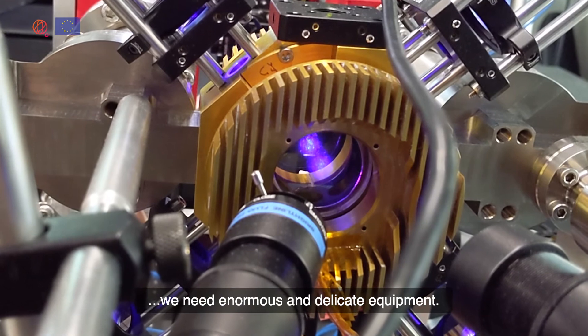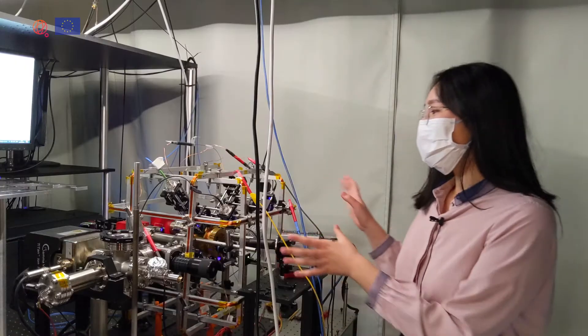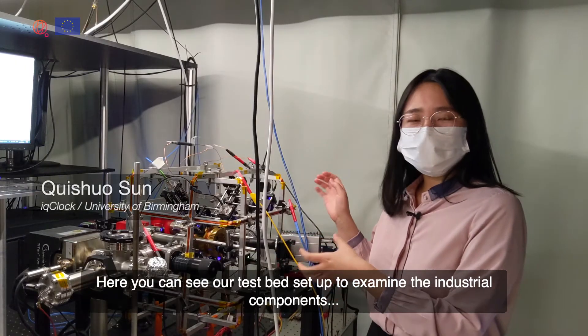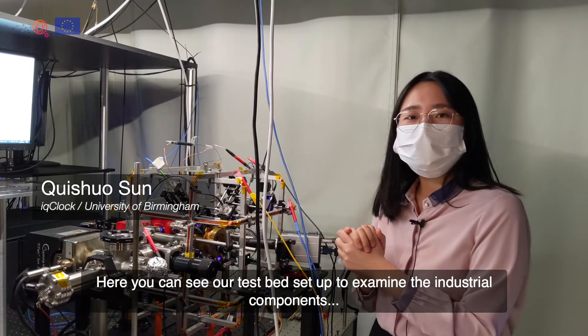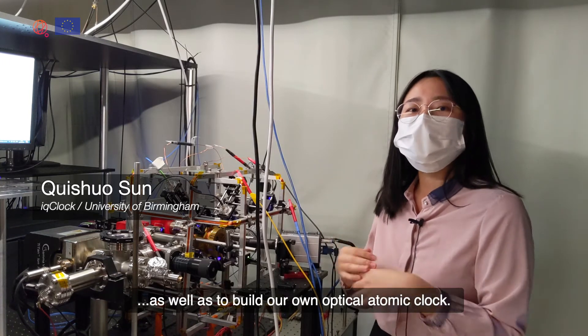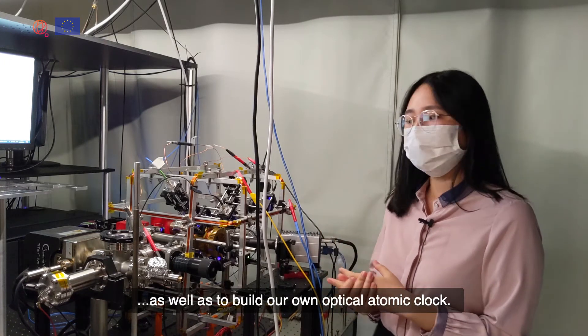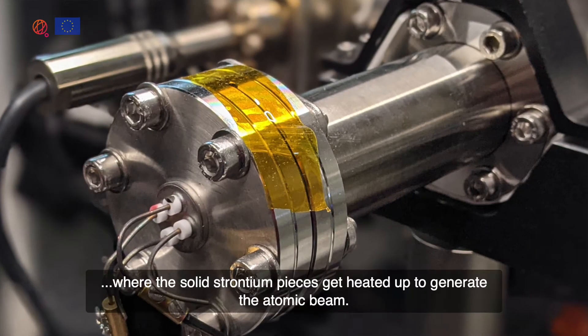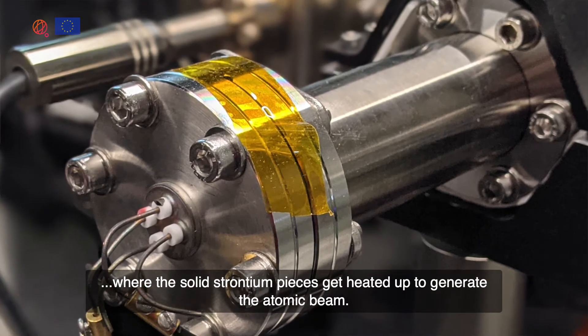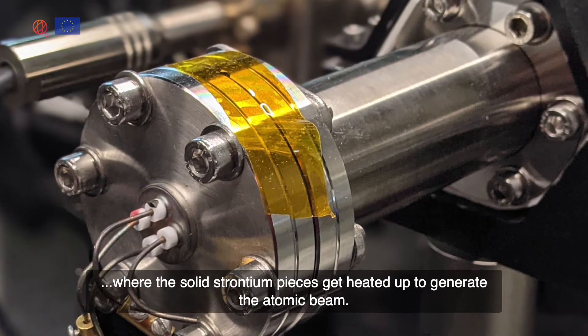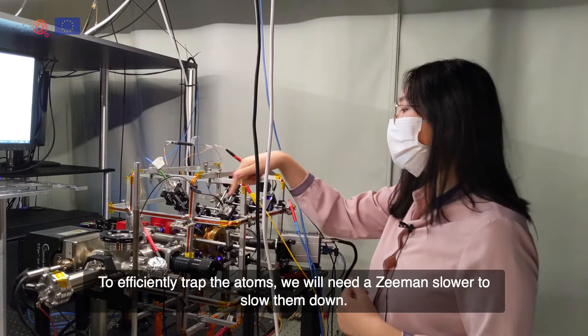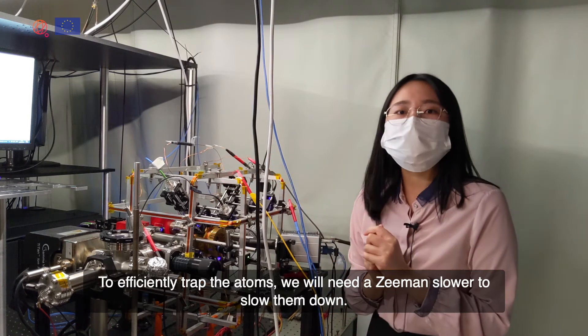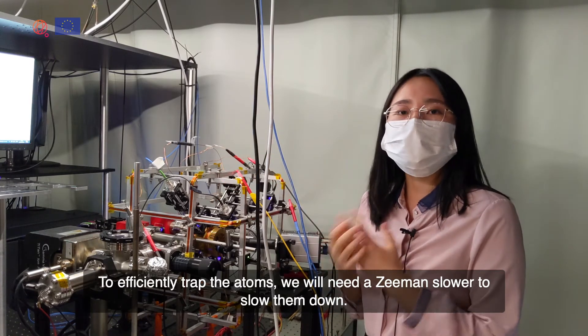Here you can see our test bed setup to examine the industrial components as well as to build our own optical atomic clock. In this part you can see the atomic oven where the solid strontium pieces get heated up to generate the atomic beam. Then, to efficiently trap the atoms, we need the Zeeman slower to slow them down.